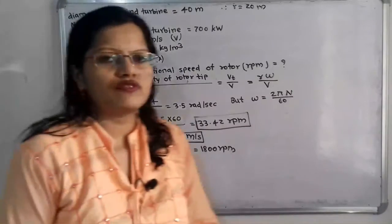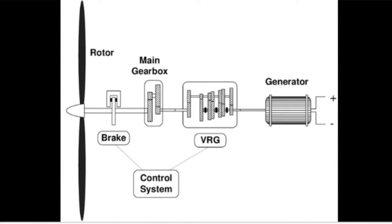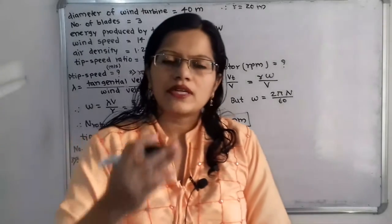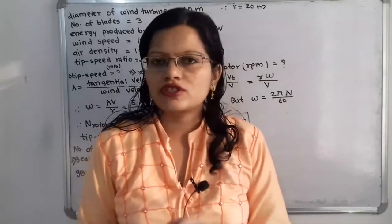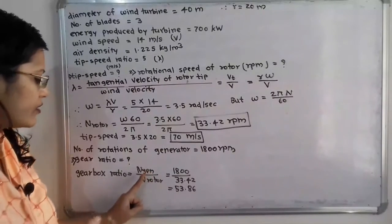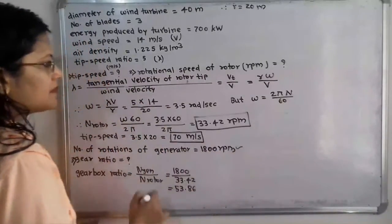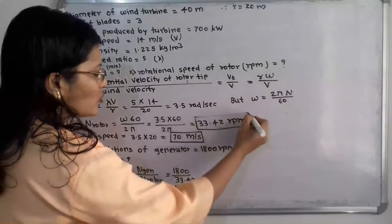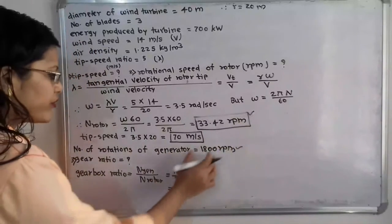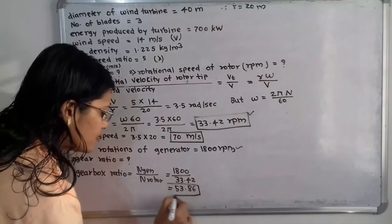Now we move to the last part: the generator runs at 1800 rpm and we have to find the gear ratio. The gearbox ratio equals the number of rotations of the generator divided by the number of rotations of the rotor. Both are in revolution per minute, so no unit conversion is needed. Gear ratio equals 1800 divided by 33.42, which gives 53.86.